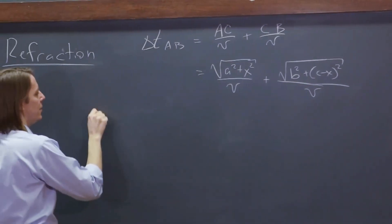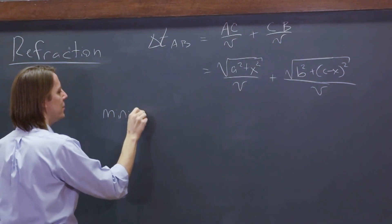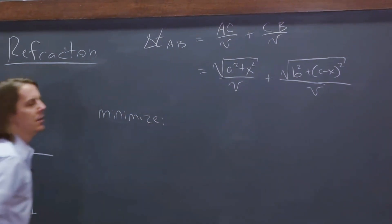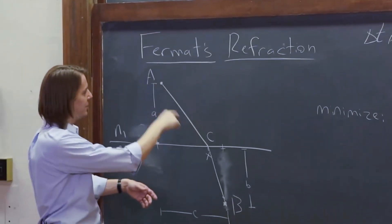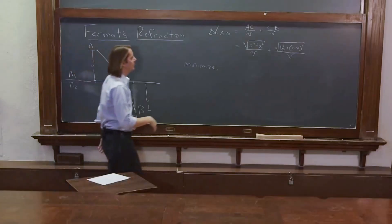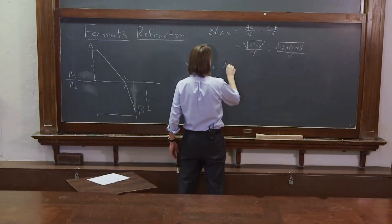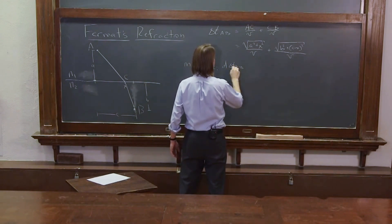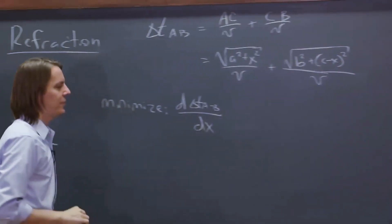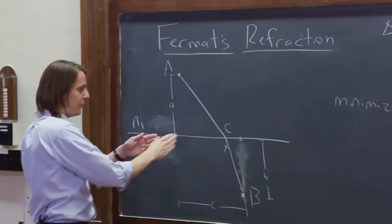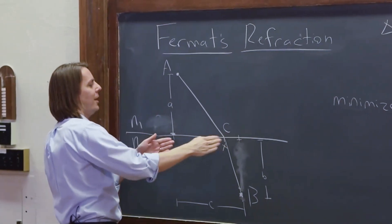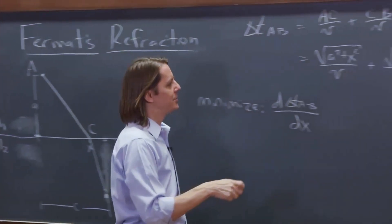And we want to do the same thing. We want to minimize that time. We just calculated the time to get from A to B. Fermat says it should be the fastest time, the minimum time. So d delta T, A to B, dX. And we're doing dX because we're saying which path does it take. Let's try all the paths and figure out which one has the minimum time.